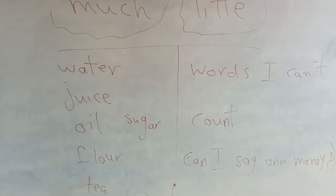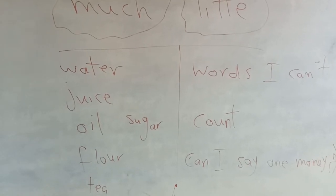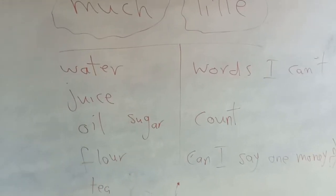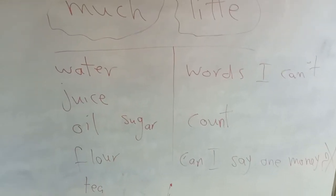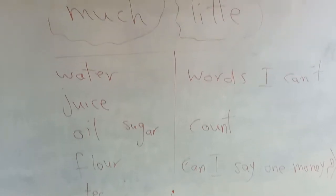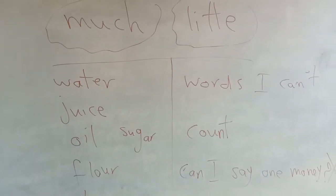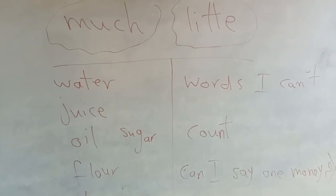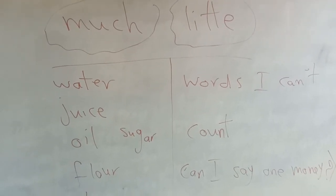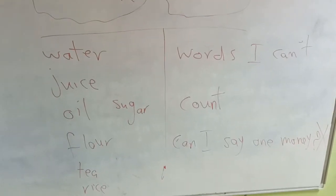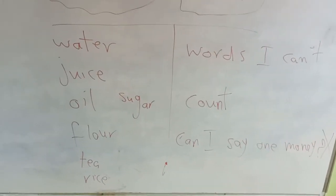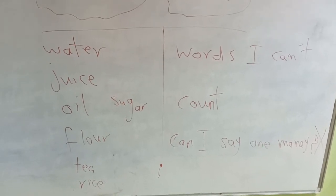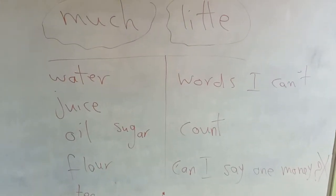I use much and little with all liquids, because you can't count liquids — like water, milk, juice, coffee, tea, oil. For example: I need much water. I need little water, because little means small in quantity, not so much. I want much juice. I want much oil. Would you please give me much sugar? Or, how much sugar do you want?